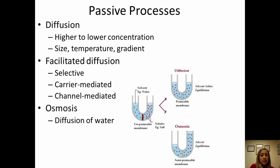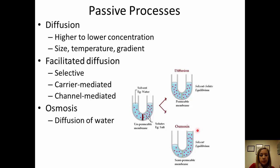Facilitated diffusion means that something is present to help particles move — either a carrier of some sort or a channel. This is more selective because proteins typically help with this, and they only allow certain size particles through. Osmosis is the diffusion of water. Water moves to the more concentrated side to balance things out so that the proportion on each side is equal and the gradient is equal on both sides.